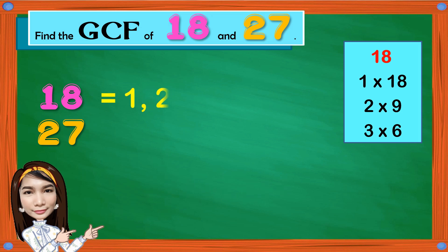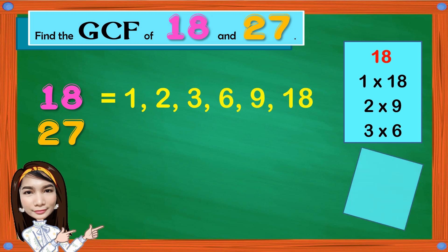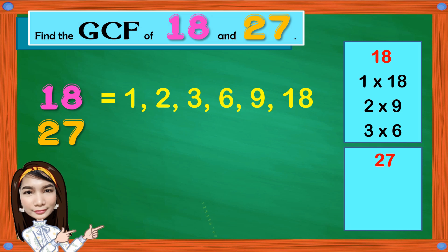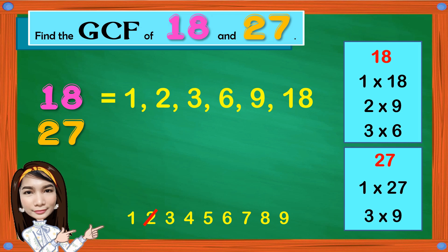The factors of 18 are 1, 2, 3, 6, 9, and 18. Next, we have 27. Using the counting numbers 1 to 9, we have 1 times 27 is 27. 27 is not divisible by 2. 3 times 9 is 27. 27 is not divisible by 4, not divisible by 5, not divisible by 6, not divisible by 7, not divisible by 8. And 9 is already given.